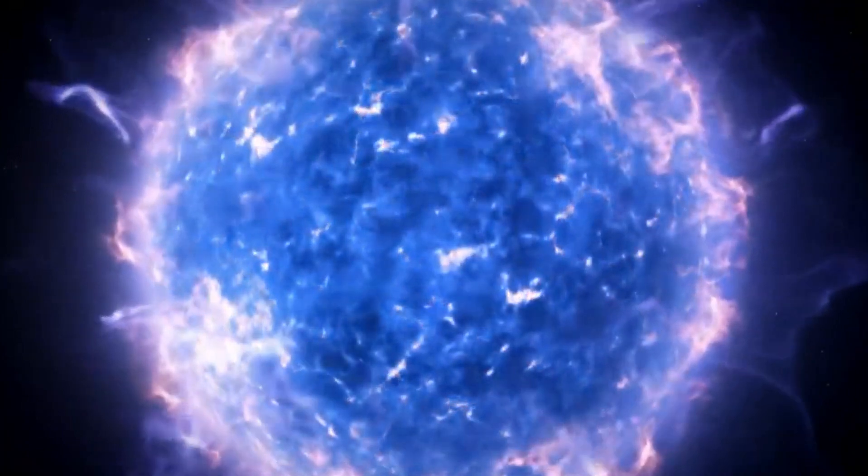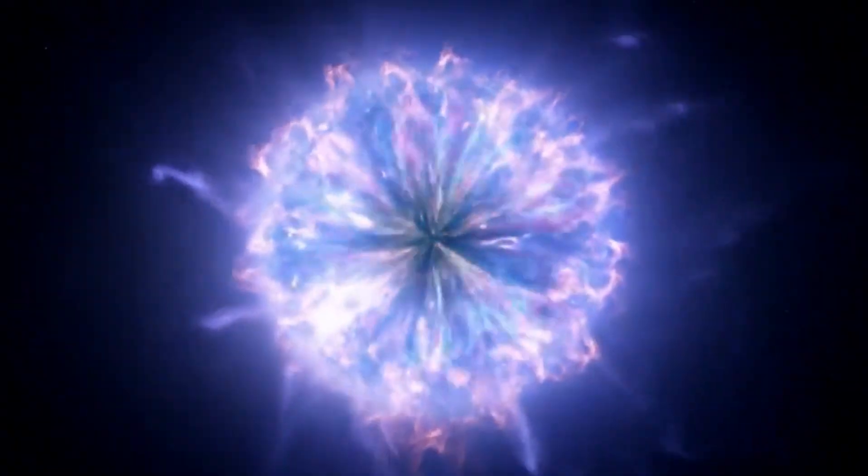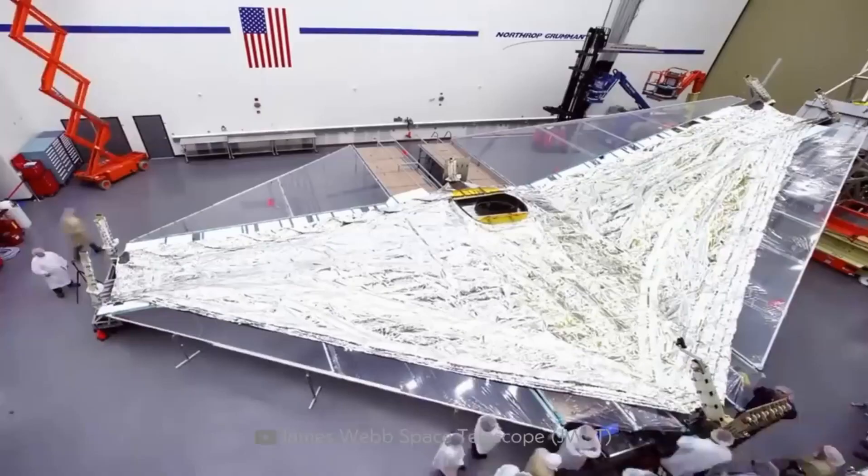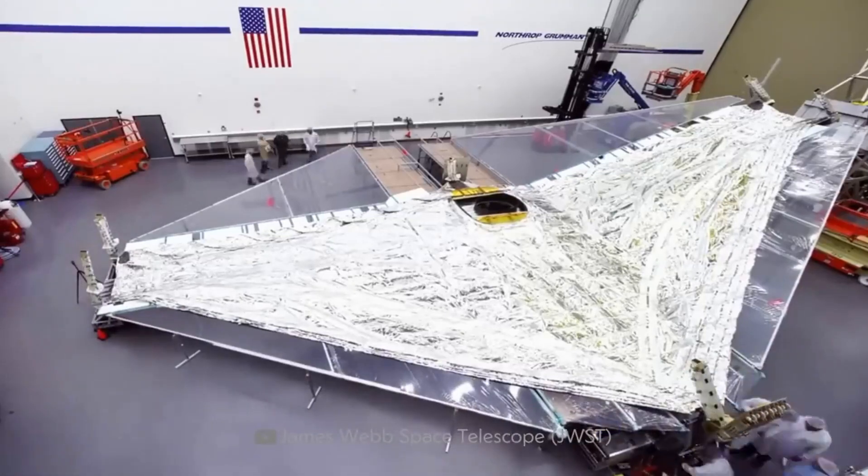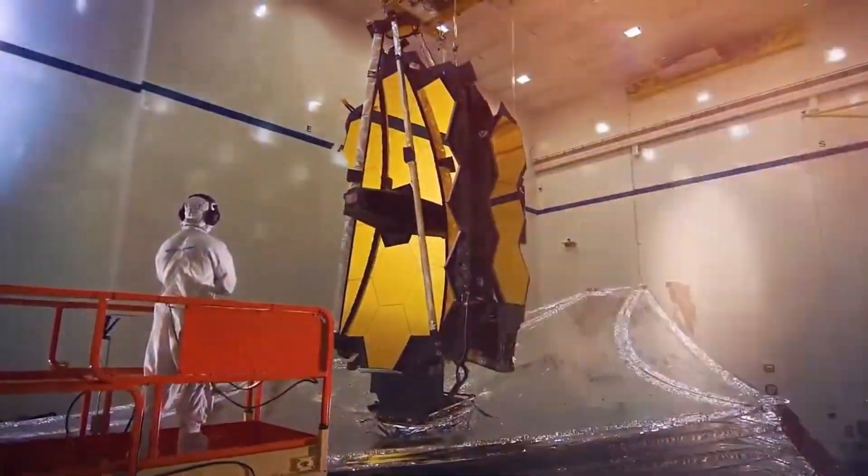James Webb's journey began with challenges even before detaching from Earth. Technical issues led to increased construction costs, and the U.S. Senate contemplated halting the project. However, the decision no longer rested solely with the Americans or NASA.